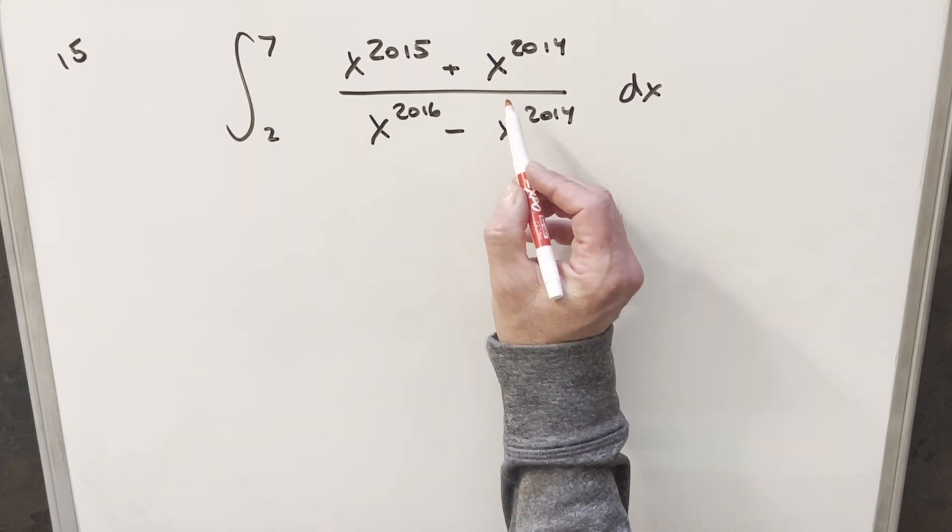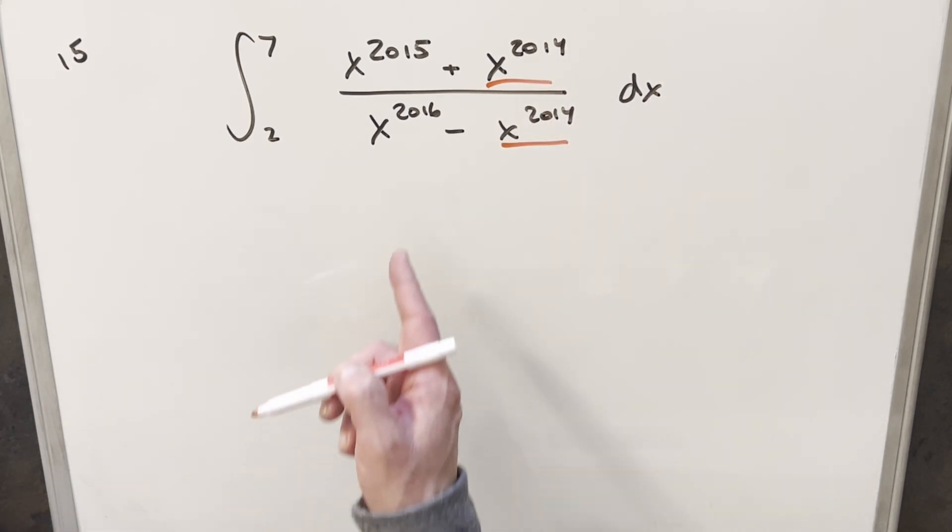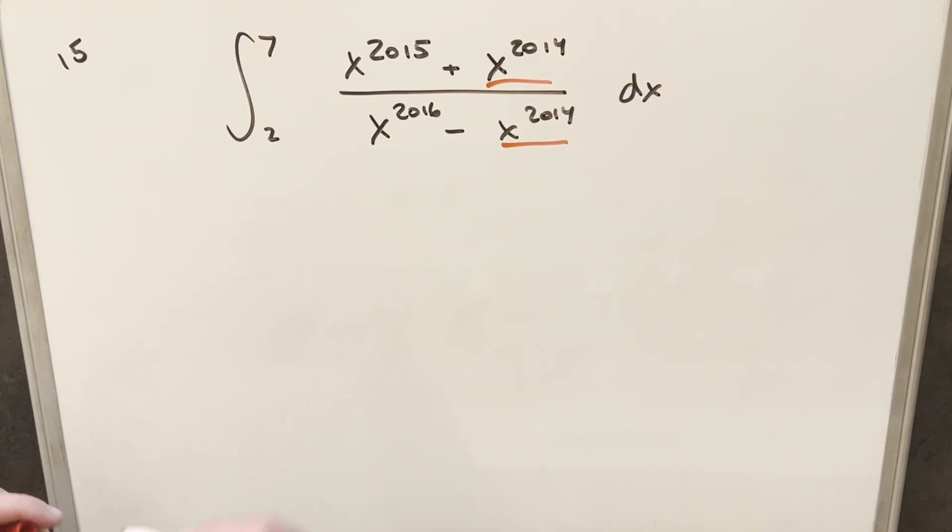To get started with this, I noticed that we have x^2014 in the numerator and denominator, and with larger exponents here, this is going to be factorable.